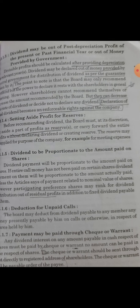So far as participating preference shares are concerned, participating preference shareholders receive, in addition to their fixed dividend, an additional share in the residual profit. Participating preference shares may rank for dividend distribution out of residual profit in addition to the fixed dividend payable to them. So, they have a share in both the fixed dividend and the residual profit.